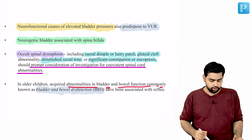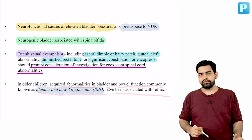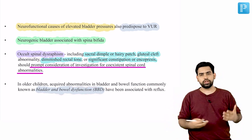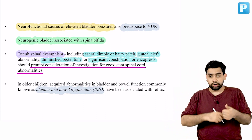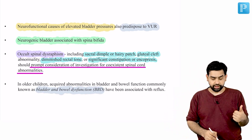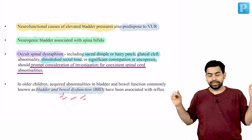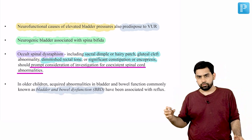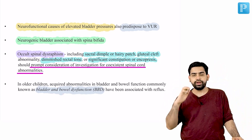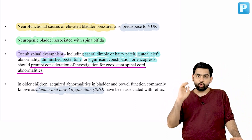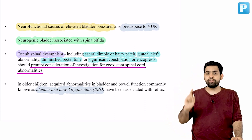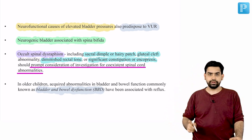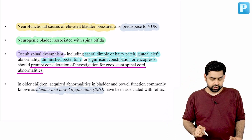In older children, acquired abnormalities of bladder function — commonly known as bowel and bladder dysfunction — have been associated with reflux. Constipation in children and poor toilet training are significant causes of VUR. Whenever managing a patient with VUR, you must rule out bowel and bladder dysfunction, and if present, treat it beforehand.